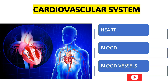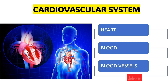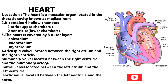Generally, the cardiovascular system mainly consists of three things: heart, blood vessels, and blood. The term cardiovascular itself says that cardio means heart, vascular means blood vessels and blood. All these three things together make up the cardiovascular system.